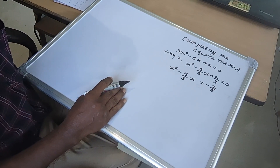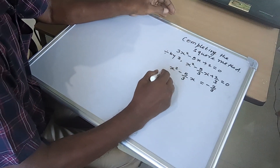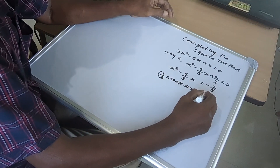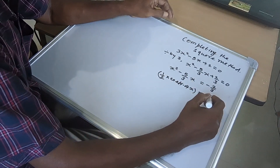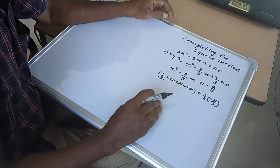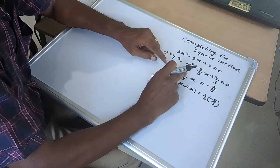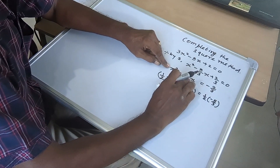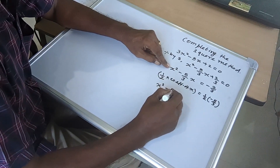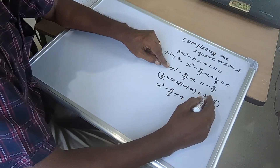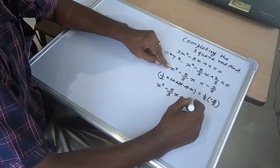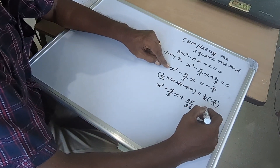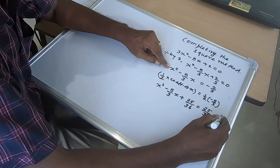Now we have to find one factor — that is half of the coefficient of x. The coefficient of x is minus 5/3, so half of that is minus 5/6. We square this term to get 25/36, and add it to both sides: x² minus 5/3 x plus 25/36 equal to 25/36 minus 2/3.